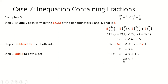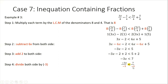Simplifying gives us negative 3x < 7. To isolate x, we divide both sides by negative 3. Remembering to flip the inequality sign when dividing by a negative number: negative 3x over negative 3 < 7 over negative 3. Therefore our solution is x is greater than negative 7 over 3.